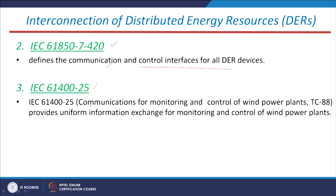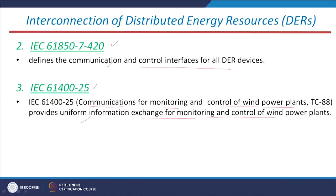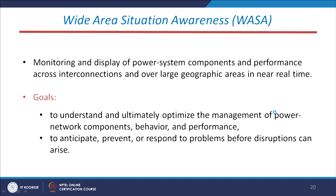IEC 61400-25 (TC88) covers communications for monitoring and control of wind power plants. In a smart grid system we have wind power plants, solar power plants, fuel cells, and batteries — these upcoming generation and storage systems need defined rules for how to control, communicate, and monitor them. This standard provides information exchange for monitoring and control of wind power plants. This concludes the first standard area — interconnecting DERs to the existing network.